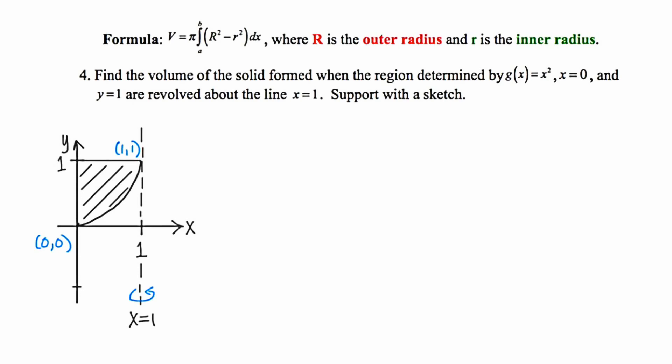In number 4, we're asked to find the volume of the solid formed when the region determined by g(x) equals x squared, x equals 0, and y equals 1 are revolved about the line x equals 1. The axis of rotation is x equals 1 — this time vertical — drawn as a dotted line with a rotation arrow. The region is the parabola g(x), the line x equals 0, and the upper line y equals 1, all revolved about x equals 1.